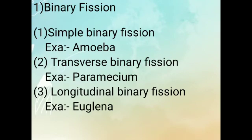First: Binary Fission. This process occurs in three methods. First: Simple Binary Fission — for example, Amoeba. Second: Transverse Binary Fission — for example, Paramecium. And third: Longitudinal Binary Fission — for example, Euglena.